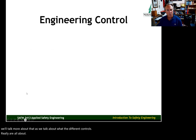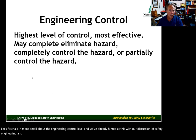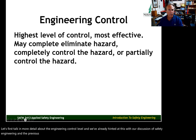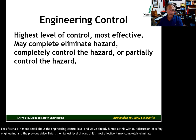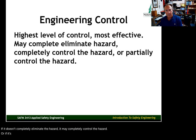Let's talk in more detail about the engineering control level. This is the highest level of control — it's most effective. It may completely eliminate the hazard, or if it doesn't eliminate it, it may completely control it. Or, if not quite as effective, it can still be an engineering control that only partially controls the hazard.